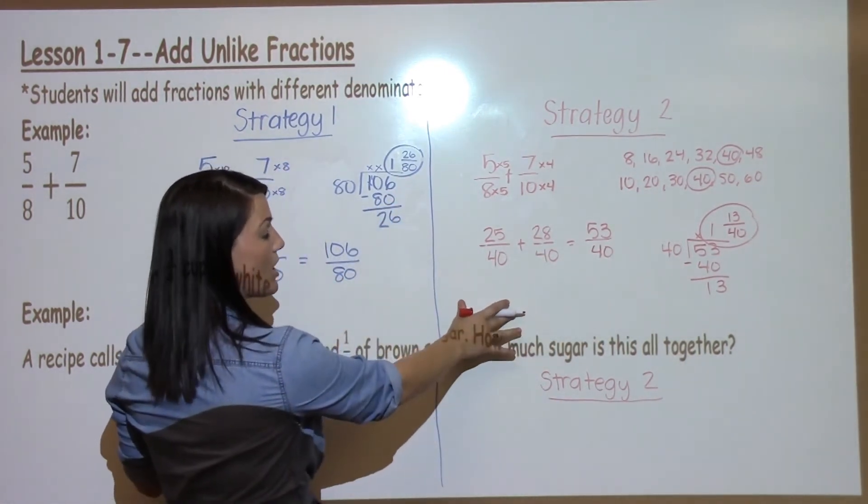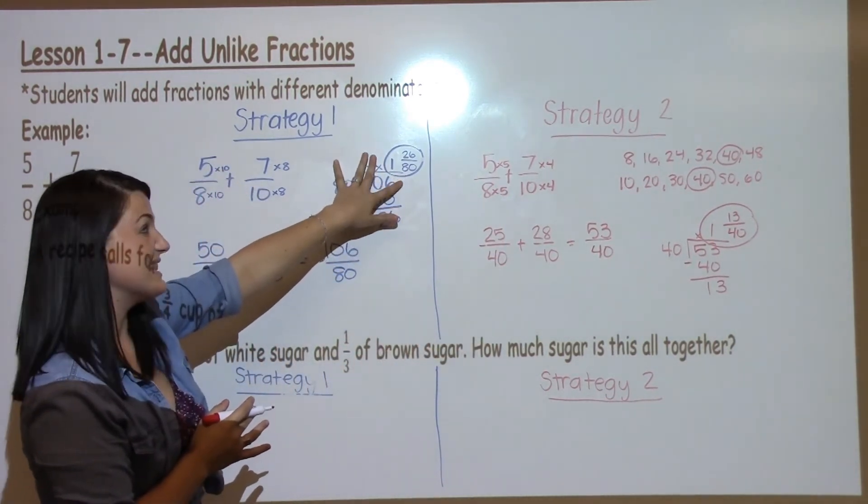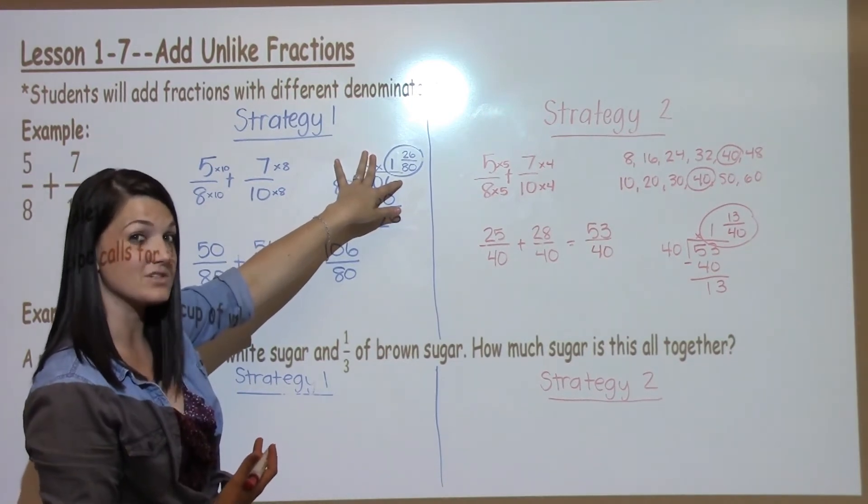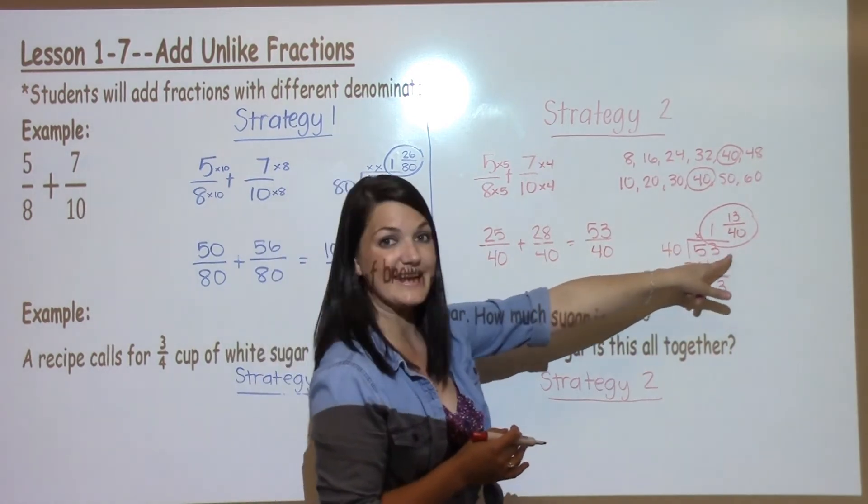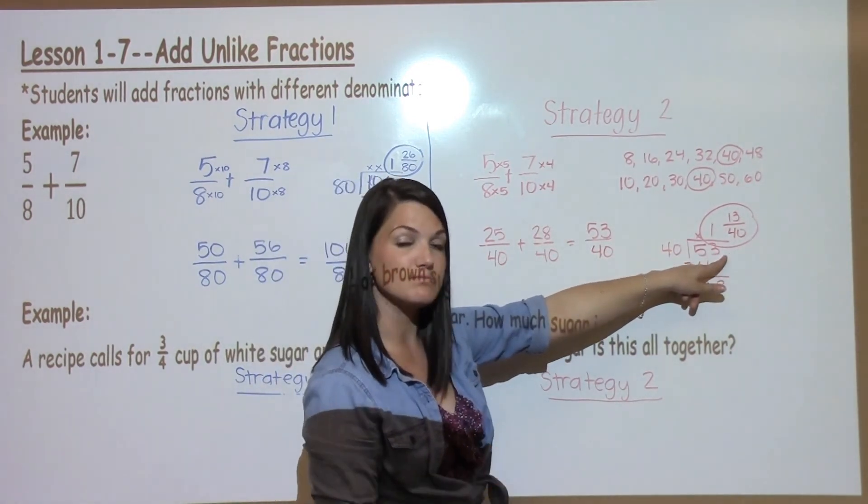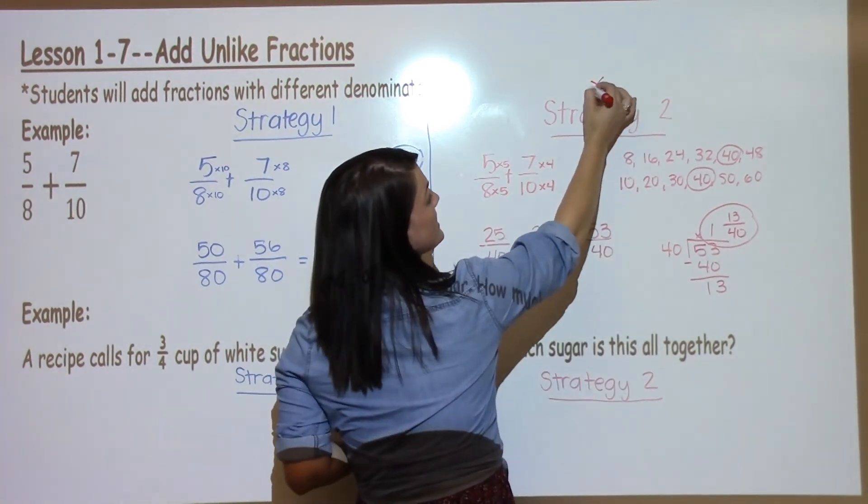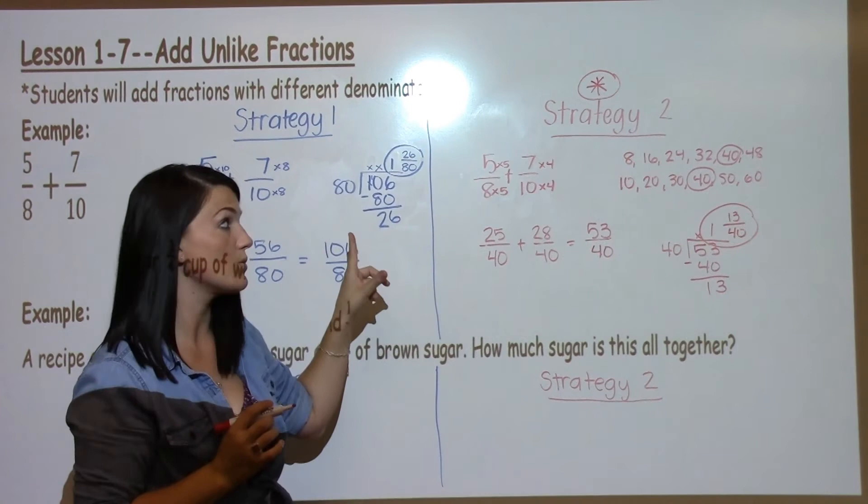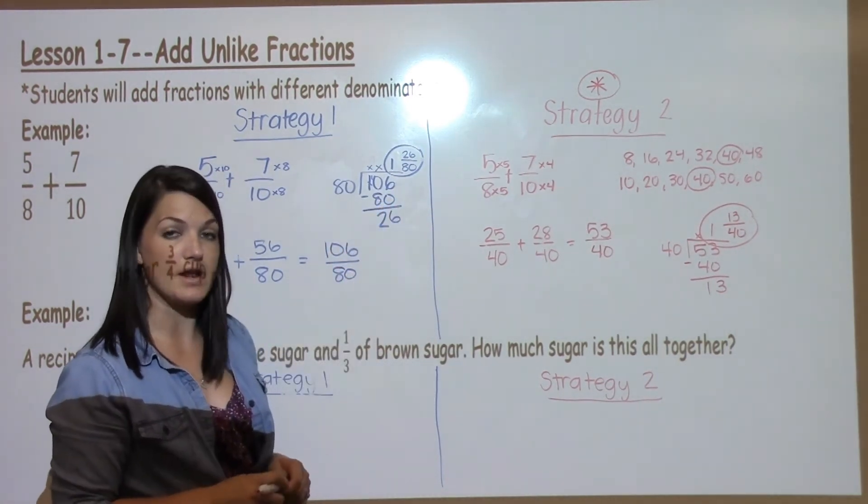The strategies are different because this one, you're working with larger numbers, and in this strategy, you're probably going to have to reduce your answer down for your teacher to really like your answer. And with this strategy, you already have the simplest answer, the smallest form that it can go. My favorite strategy is strategy 2 because you don't have to do the extra work like in strategy 1 when you would have to take this answer and reduce it later on.